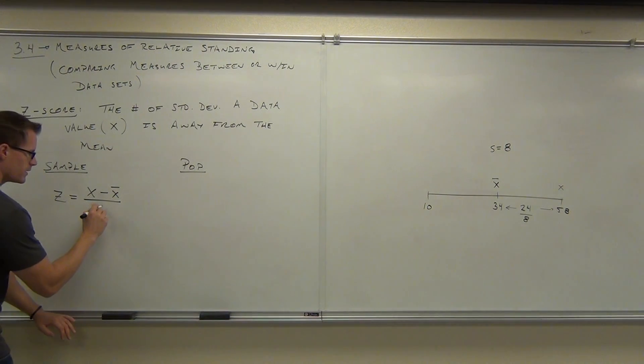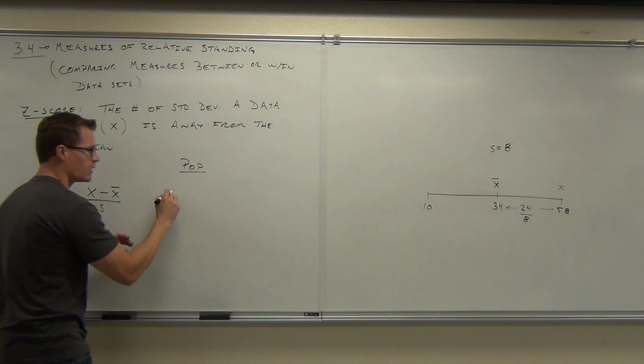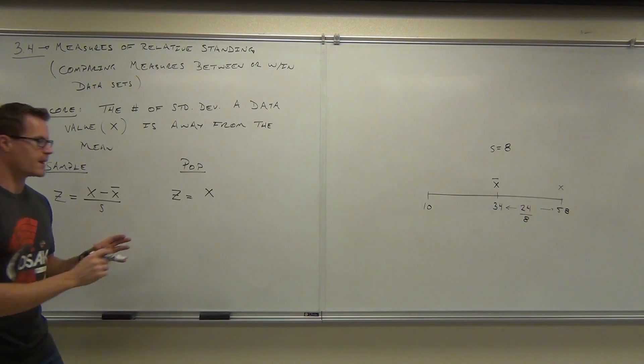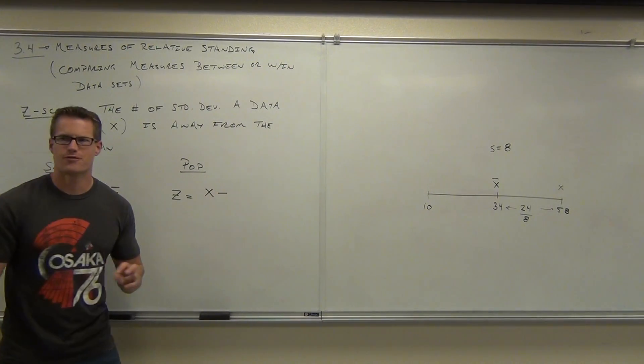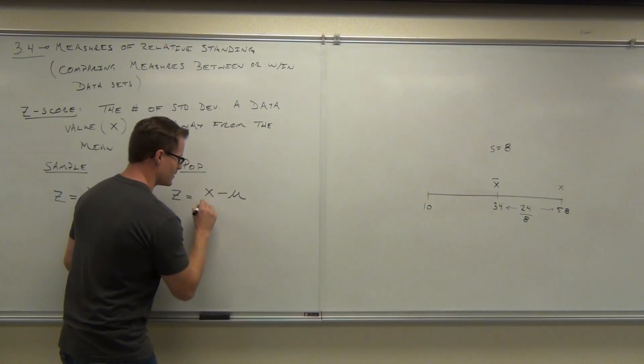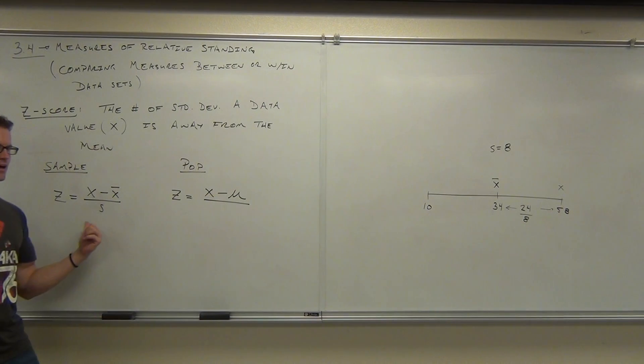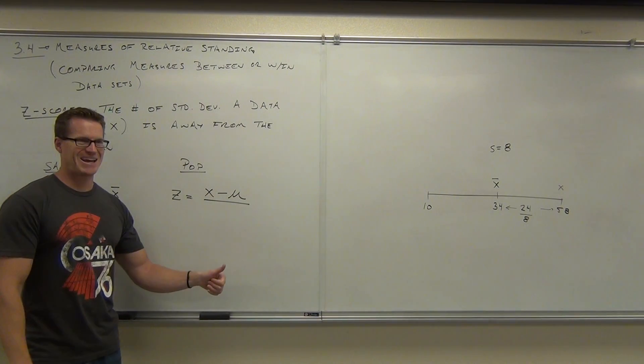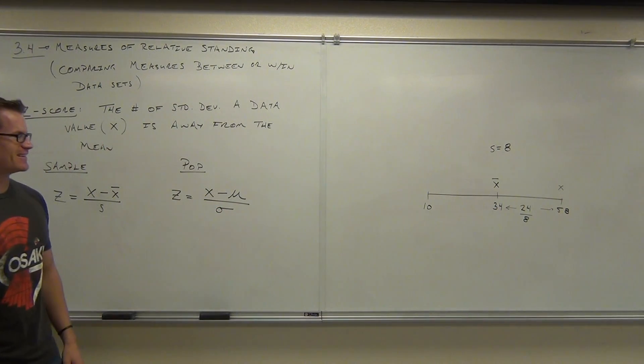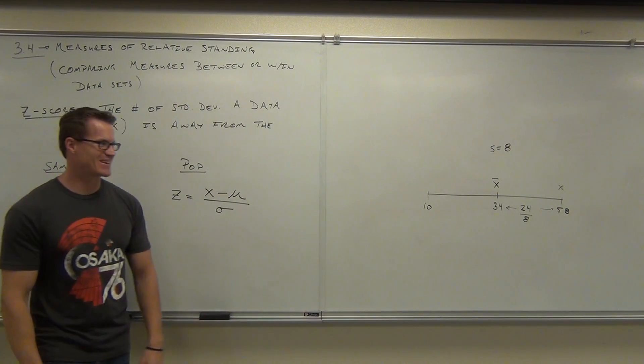So here we'll divide by our standard deviation. We're using the letter S because we have a sample. But you're going to calculate the population exactly the same way. You'll still have a z. You'll still have an x because the data value doesn't change its variable. But instead of x-bar, what are you going to have for a population? Mu, that's right. We have fun with mu. And instead of S, what are you going to have? Sigma. The sigma.